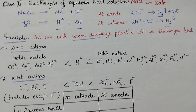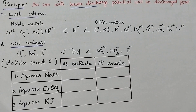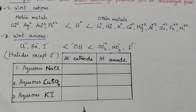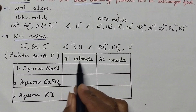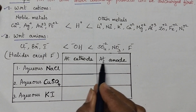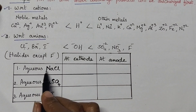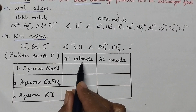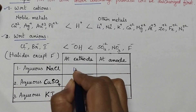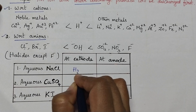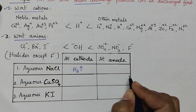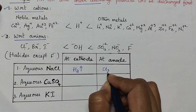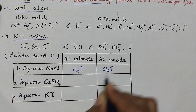In the present case with aqueous NaCl solution, at the cathode hydrogen gas will be liberated and at the anode chlorine gas will be liberated.